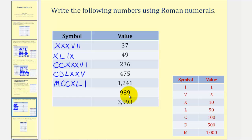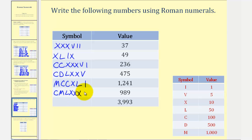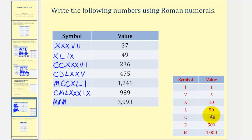For nine hundred eighty-nine, we'll start with nine hundred by using a C before an M — this would be one thousand minus one hundred. For eighty, we will use a fifty and three tens, or L, X, X, X. For nine, we'll use an I before an X for ten minus one. Finally, for three thousand nine hundred ninety-three, we'll use three M's for three thousand. For nine hundred, we'll use a C before an M for one thousand minus one hundred. And then for ninety, we'll use an X before a C for one hundred minus ten. And then for three, we have three capital I's.